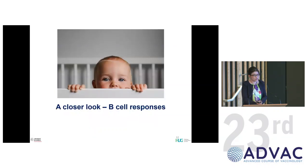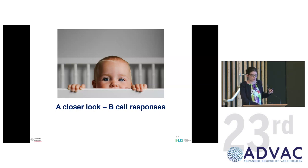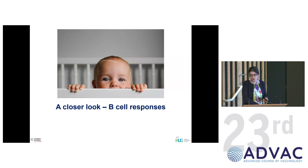In summary, upon antigen exposure and stimulation, neonates have very specific patterns of innate responses, an excess Th2 response, limited interferon-gamma response, and lower CD8 and B cell responses. Now when we talk about vaccines, most childhood vaccinations work by inducing B cells and antibodies. I'd like to show you how B cell responses differ in early life compared to adult B cell responses.